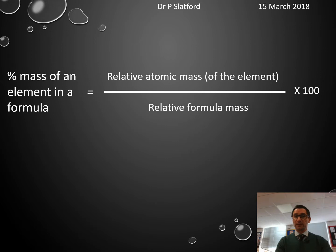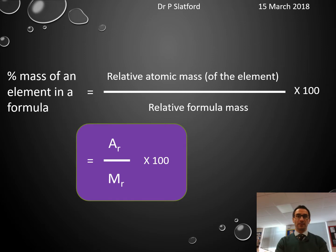Let's do a few examples. We're going to use this equation: the percentage mass of an element in a formula is the relative atomic mass of that element divided by the total relative formula mass times 100. You might think of it as Ar divided by Mr times 100.